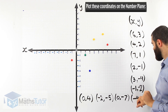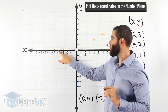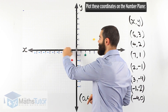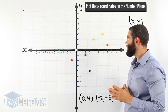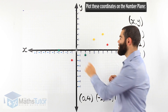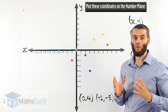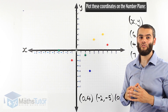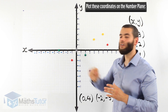For (-4, 0): negative 4 on the x-axis, and 0 on the y-axis means it stays right on the actual line — it doesn't go up or down. The point in the center is (0, 0), called the origin, where the zero from the x-axis and the zero from the y-axis overlap. So (-4, 0) sits on the x-axis line.